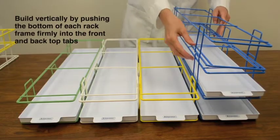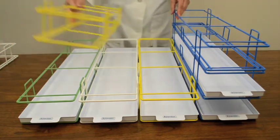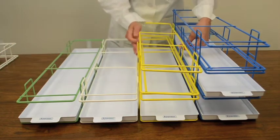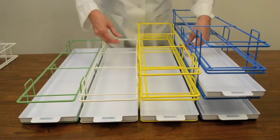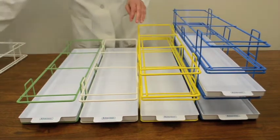To build vertically, work on a slight angle and push the bottom of the upper rack frame so that the front and back tab areas press into the front and back tabs of the lower rack frame. This is a friction fit and very secure.